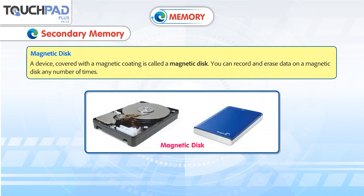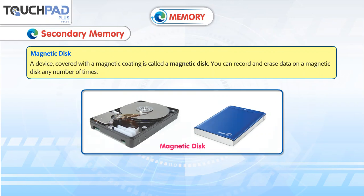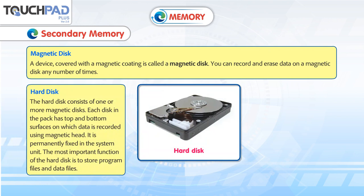A device covered with a magnetic coating is called a magnetic disk. You can record and erase data on a magnetic disk any number of times. A hard disk consists of one or more magnetic disks. Each disk has top and bottom surfaces on which data is recorded using a magnetic head. It is permanently fixed in the system unit.